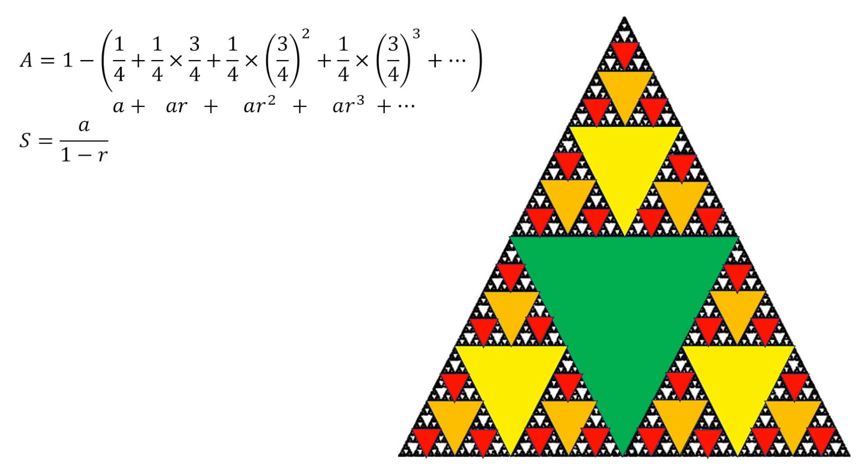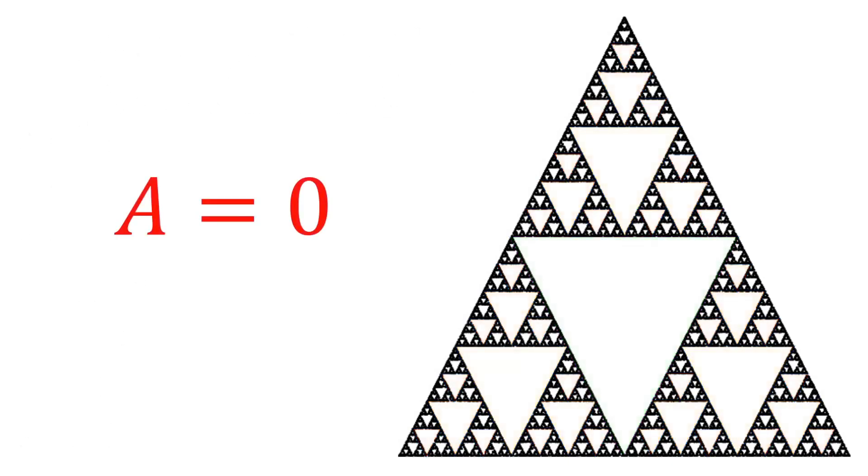So identifying our values here, we see that the first term a is one-fourth, and the common ratio r is three-fourths. Substituting into our formula, we'll have one minus that infinite sum, which will be calculated using the formula: one-fourth divided by one minus three-fourths. Simplifying, one minus three-fourths is one-fourth, so we have one-fourth divided by one-fourth, which is one. So the area is one minus one, which leaves us with the astonishing fact that the area of the Sierpinski triangle is zero.